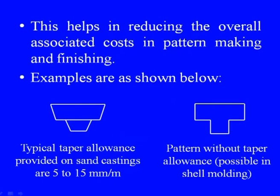Minimum values for dimensional finish and lesser draft can be set since the process inherently provides good surface finish. The draft can be negligible as the shell is broken out to take the finished casting from it, helping in reducing the overall cost in pattern making and finishing. A pattern with taper allowance on sand castings requires 15 to 5 mm per meter, whereas a pattern without taper allowance is possible in shell molding.